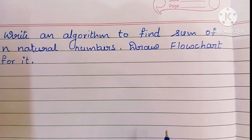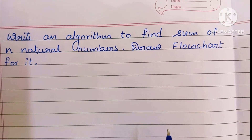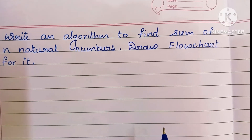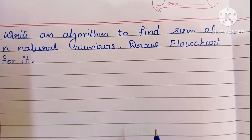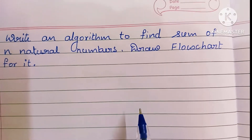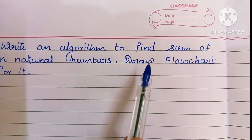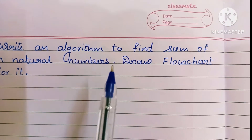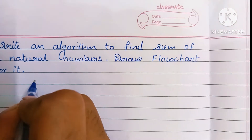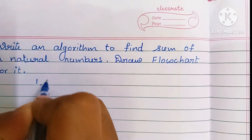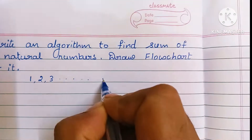Hi guys. In this video we are going to learn how to write an algorithm to find the sum of n natural numbers and draw a flowchart for it. Natural numbers always start with 1, 2, 3, up to infinity.